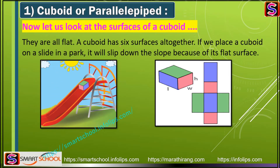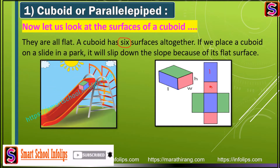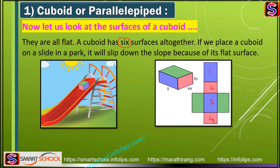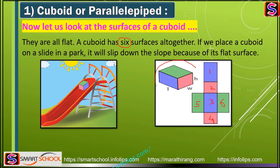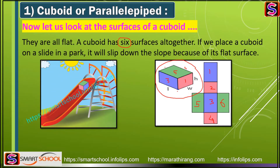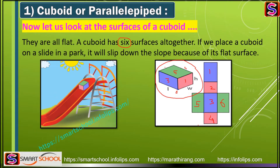There are six surfaces: one, two, three, four, five, and six. All six surfaces are combined to make the cuboid shape. The front, back, left, right, top, and bottom - that's six surfaces. Objects on a table that are cuboid-shaped rest on these flat surfaces.